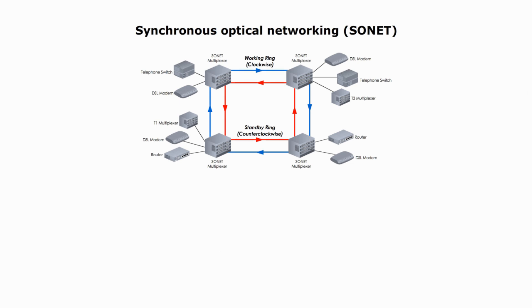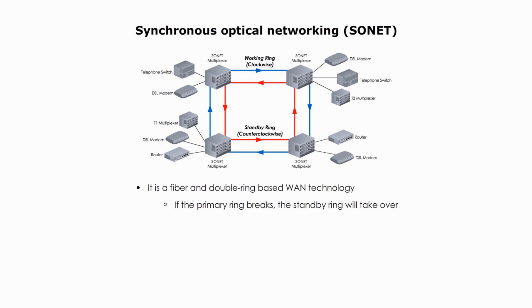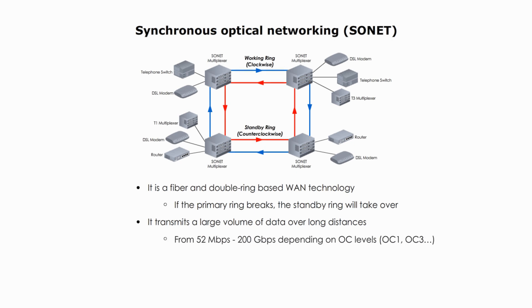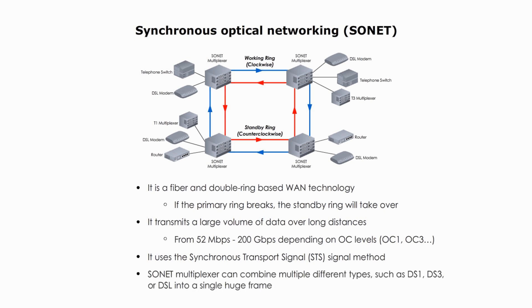Here are some key points about SONET. It is a fiber-based, double ring WAN technology. If the primary ring breaks, the standby secondary ring will take over. It transmits large volumes of data over long distances, from about 52 Mbps to 200 Gbps depending on OC levels. It uses a Synchronous Transport Signal (STS) method, and SONET multiplexers can combine multiple different types of frames into a single large frame.